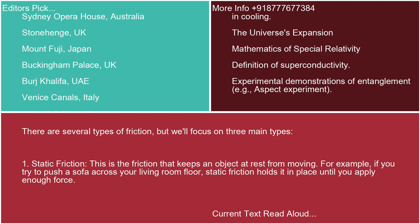Types of friction. There are several types of friction, but we'll focus on three main types. One: static friction. This is the friction that keeps an object at rest from moving. For example, if you try to push a sofa across your living room floor, static friction holds it in place until you apply enough force.